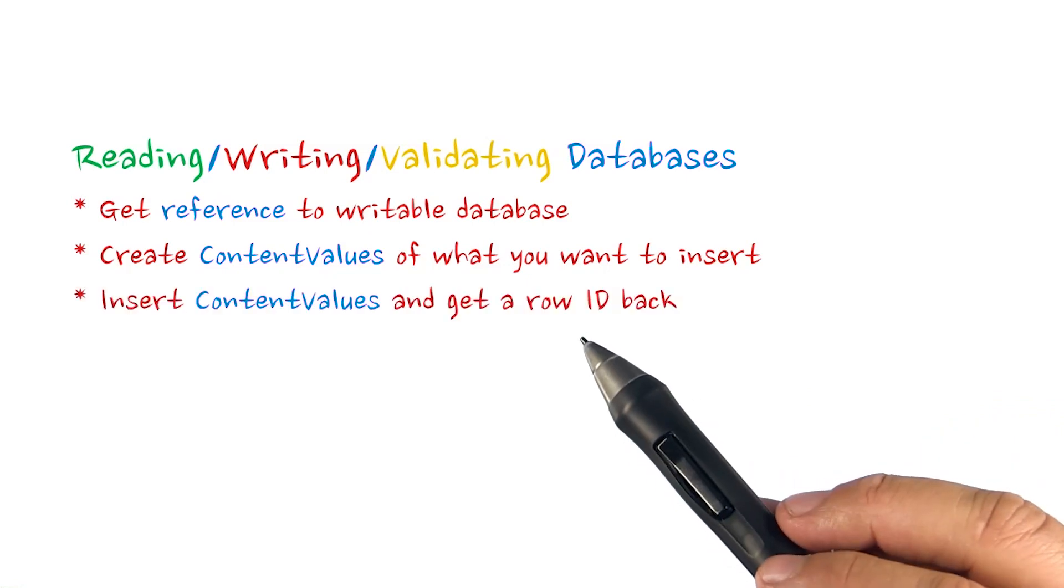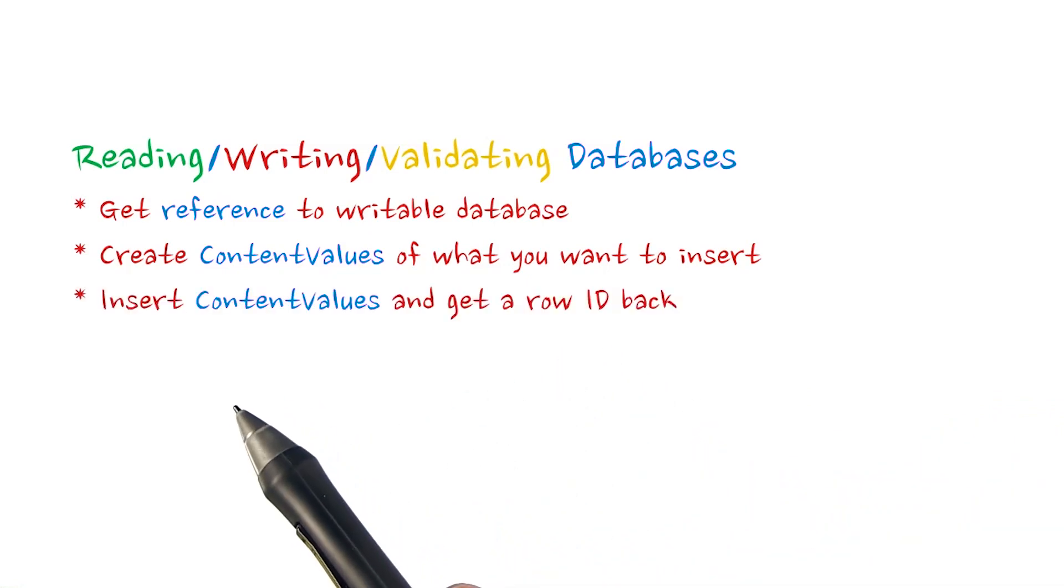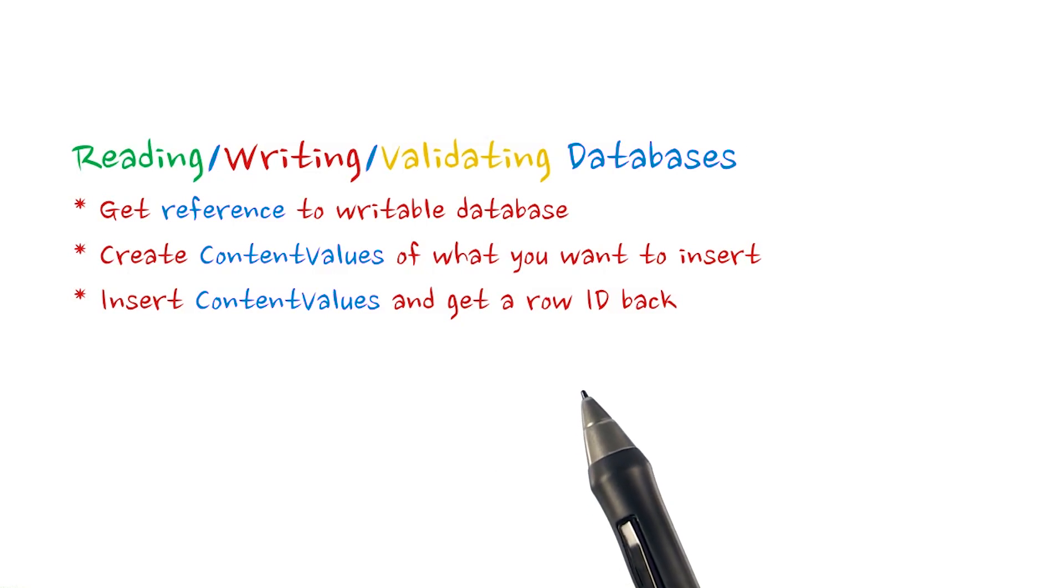Once we've created our content values, we call database.insert with the table name and content values to actually create the new row of data. The return value from our insertion is a long that contains the new row ID from the underscore ID column. If there's an error inserting, the return value is negative 1.